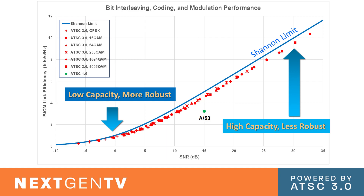The operating point of ATSC today is A53. The red points show ATSC 3.0 — broadcasters can operate at any of these points along the Shannon limit. They can decide: I want low capacity but more robust for mobile phones or tablets, or I want high capacity, less robust, perhaps for the living room television set for a 4K experience. Broadcasters can walk and chew gum at the same time — operate at this point and this point simultaneously, having a mobile service and a fixed service. Or they could say: I want my video high capacity and less robust, and my audio more robust, so if the signal starts to fade, you can still hear what's going on. For those of us who grew up with analog television, remember that's the way it used to be.